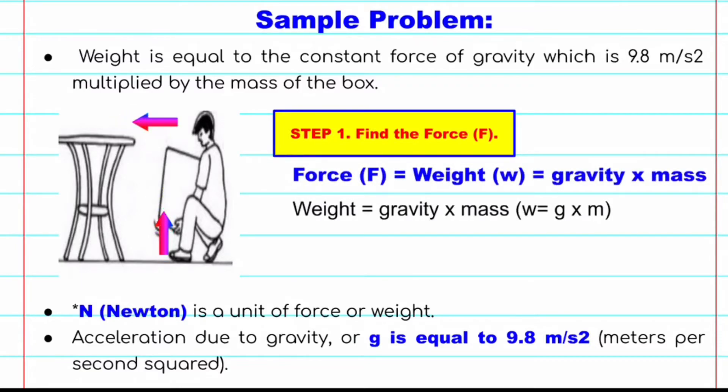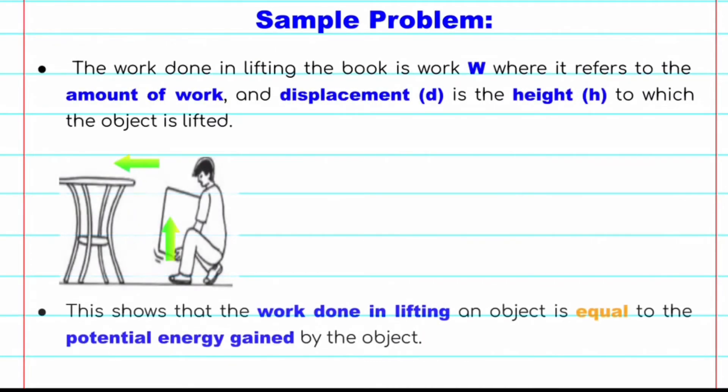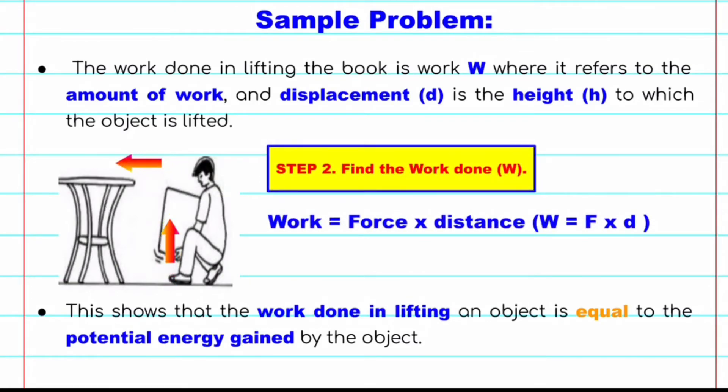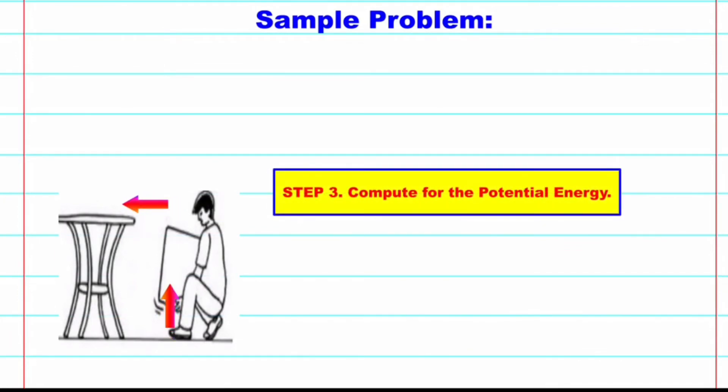Weight is equal to the constant force of gravity which is 9.8 meter per second squared multiplied by the mass of the box. Now let us try to find the force first. Here you will see that force is also equal to weight. The formula of weight is gravity times mass. So here we will multiply the values. Here we have 9.8 kilogram meter per second squared or 9.8 Newton. Remember that Newton is a unit for force, and acceleration due to gravity is equal to 9.8 meter per second squared. The work done in lifting the book refers to the amount of work, and the displacement is the height to which the object is lifted. So for our step 2, we will find the work done.